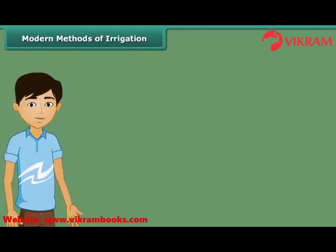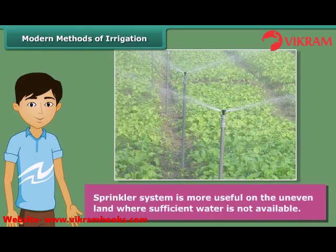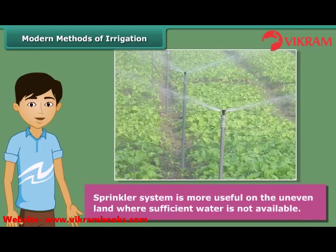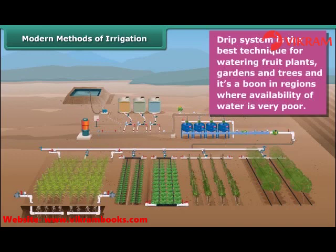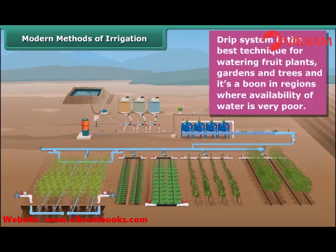Let us now know modern methods of irrigation. First is a sprinkler system. This system is most useful on uneven land where sufficient water is not available. In this system, perpendicular pipes having rotating nozzles on top are joined to the main pipeline at regular intervals. When water is allowed to flow through the main pipe under pressure with the help of a pump, it escapes from the rotating nozzles and gets sprinkled on the crop as if it is raining. Next is a drip system. In this system, the water falls drop by drop just at the position of the root. It is the best technique for watering fruit plants, gardens and trees. Water is not wasted at all, and hence it is a boon in regions where availability of water is very poor.